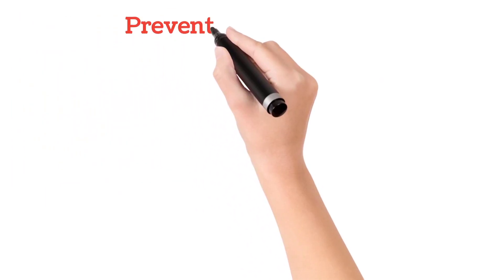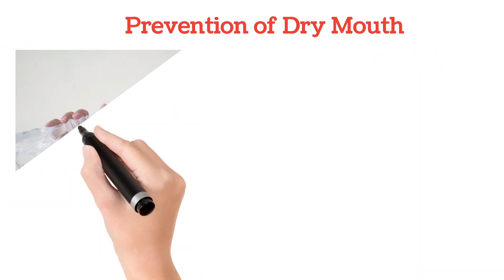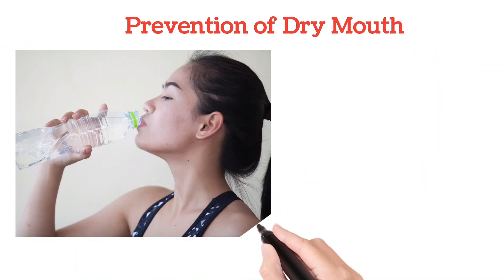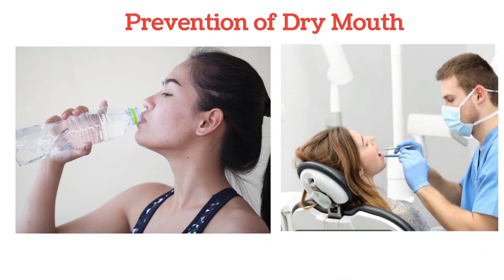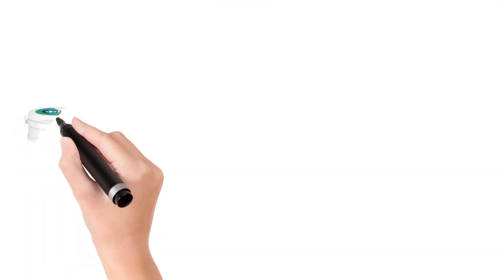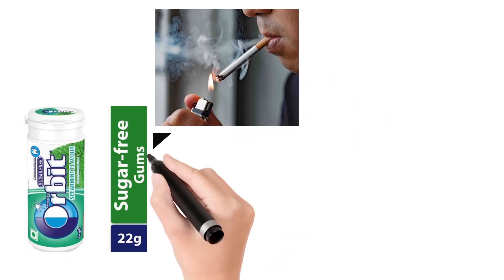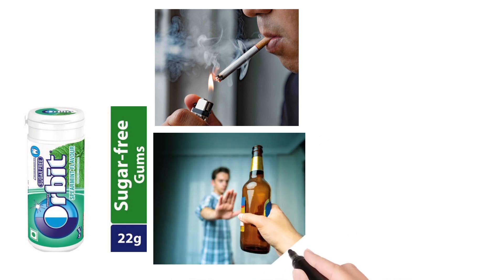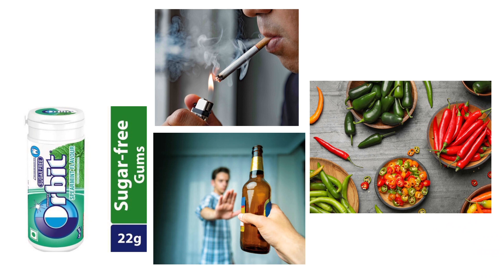We can prevent dry mouth by taking certain precautionary measures: drinking lots of water and regular sipping of water, visiting the dentist for maintaining good oral hygiene, chewing sugarless gums which stimulate salivary production, using mouthwashes, avoiding smoking, avoiding alcohol, carbonated drinks, and avoiding eating spicy, dry, and sugary foods. These precautionary measures may also prevent dry mouth.